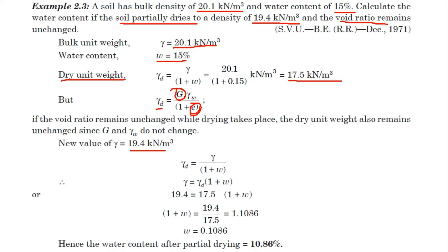Since the soil is partially dried, the new bulk unit weight is 19.4 kN/m³. Applying the formula γd = γ / (1 + w), we substitute γd = 17.5 kN/m³ because there is no change in specific gravity and void ratio. With γ = 19.4 kN/m³ and γd = 17.5 kN/m³, we can now find the unknown water content w.